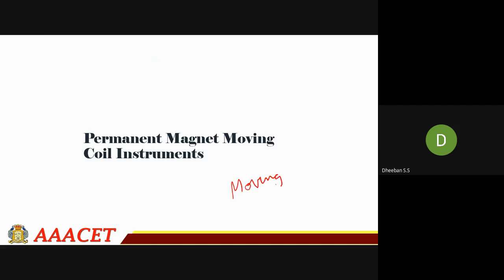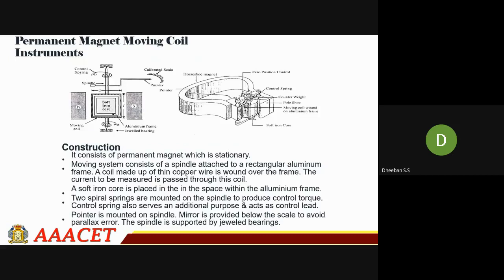The second type of instrument is the moving coil. These moving coil instruments generally have a permanent magnet, whereas in the moving iron type you have to energize by passing current — only after passing the current will the magnets be energized and the soft iron core attracted.